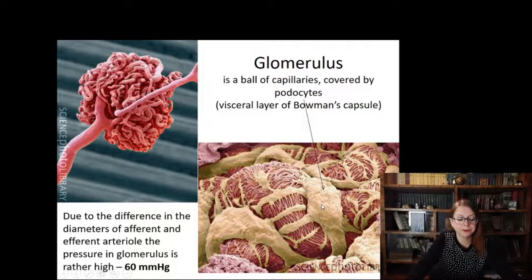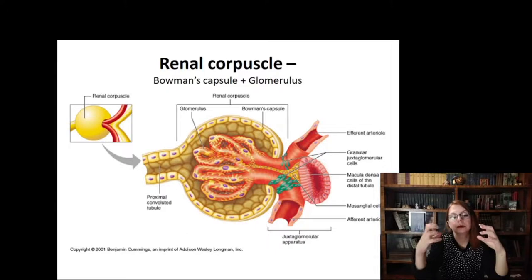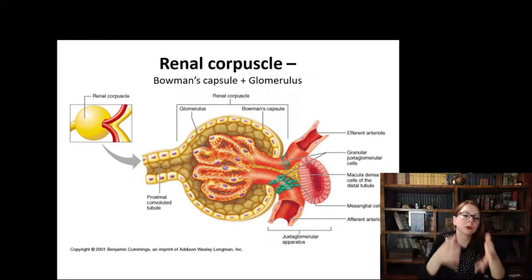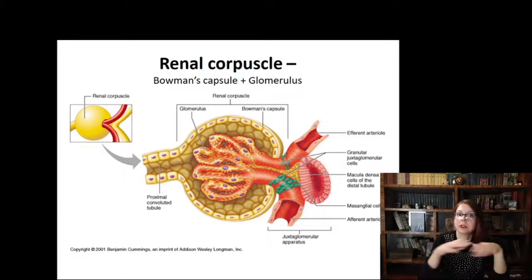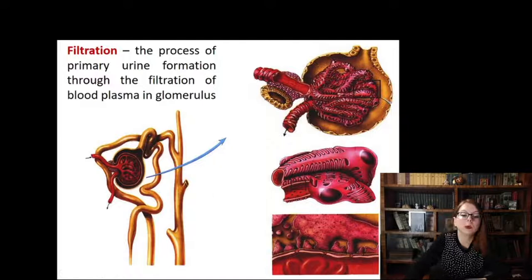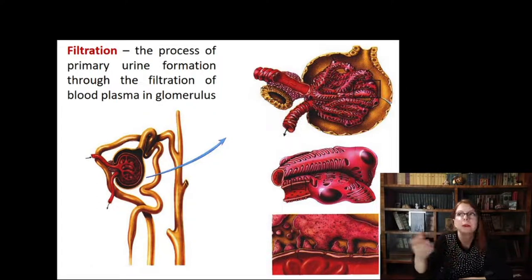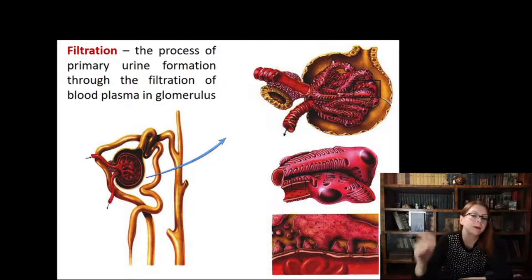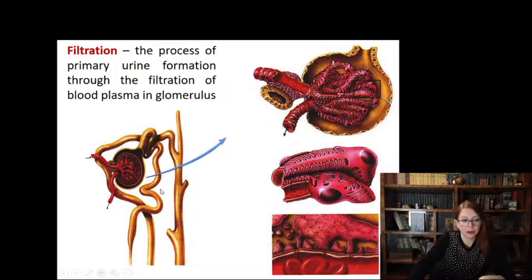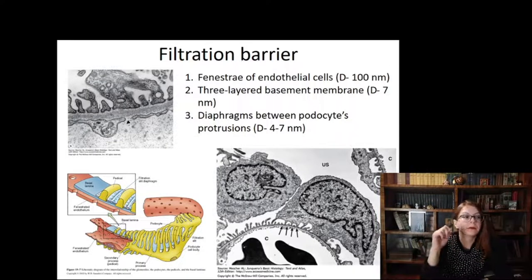The glomerulus is a ball of fenestrated capillaries surrounded by podocytes, which are the cells of the visceral layer of the Bowman's capsule. Together the blood capillaries with the Bowman's capsule represent the renal or Malpighian corpuscles — named after Malpighi, who discovered them using the first microscope. The process occurring here is filtration — this is the primary, first step in urine formation, where blood plasma percolates through the capillary walls.